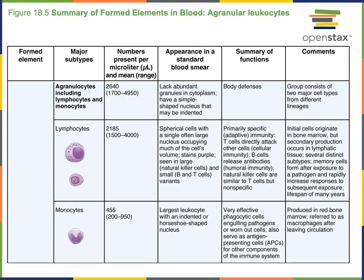Lymphocytes are the most abundant of the agranular leukocytes and the second most abundant of all leukocytes in blood. Their function is important for adaptive immunity to specific infections — lymphocytes enable the immune system to form memory against specific pathogens. There are two major categories: T cells, also known as T lymphocytes, are important for cellular immunity, helping defend against intracellular pathogens like viruses. T cells can directly attack infected cells, stimulating a process that kills those cells to prevent the virus from spreading.